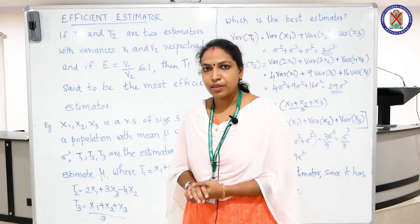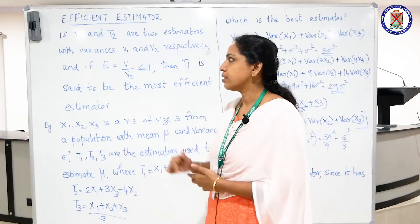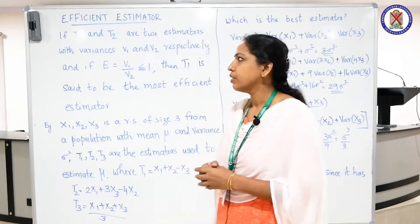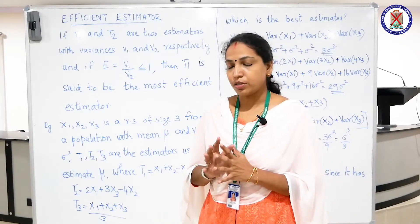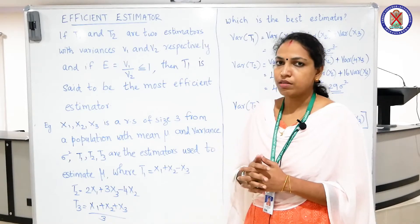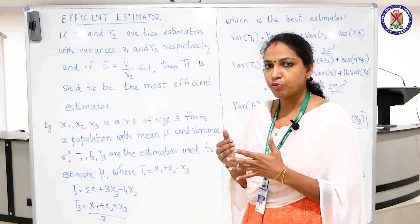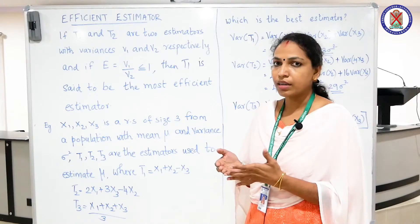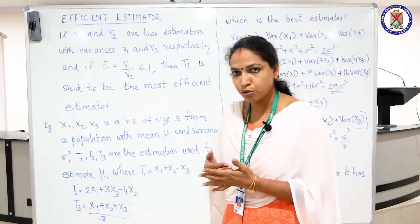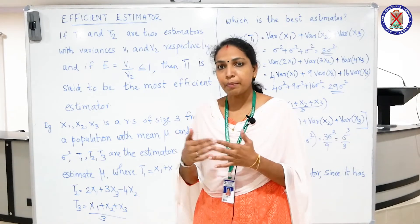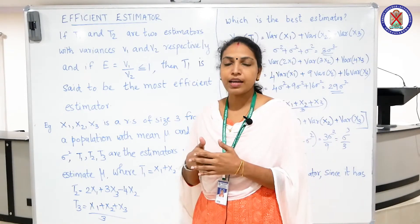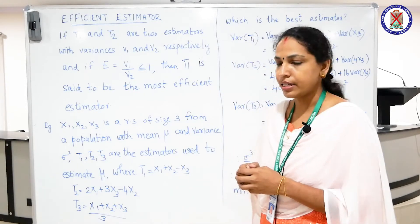The other property of an estimator is efficiency. How do we find an efficient estimator? Suppose we have two estimators t1 and t2. We have to find which estimator is more efficient. For that, we find the variance of each estimator and compare them. The estimator with minimum variance is called the efficient estimator.